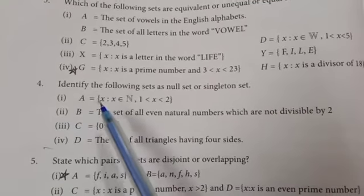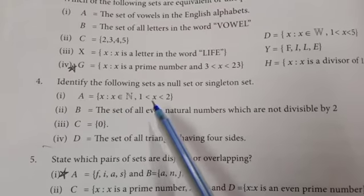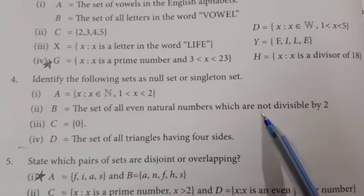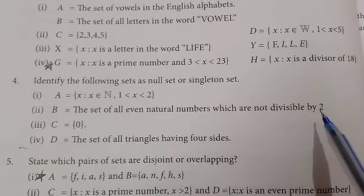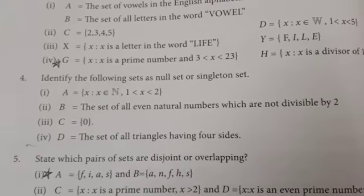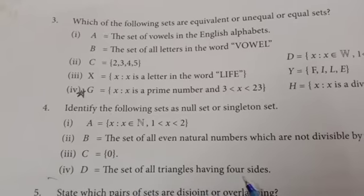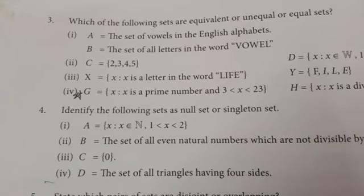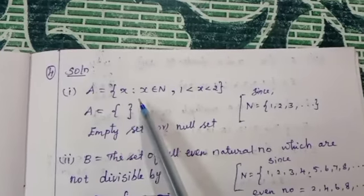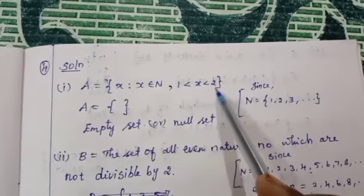First question: A is equal to set of all X such that X belongs to natural number, 1 less than X less than 2. B is equal to the set of all even natural numbers which are not divisible by 2. C is equal to set of all 0. D is equal to the set of all triangles having 4 sides.